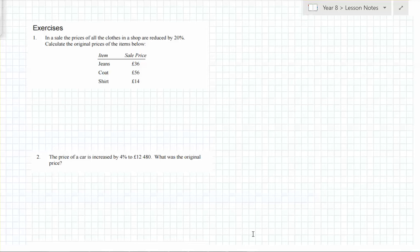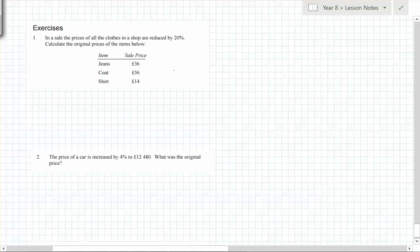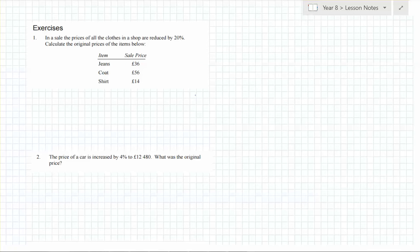Following on from last lesson: reverse percentages, where we're given the final price. During the sale, the price of all the clothes in the shop are reduced by 20 percent. Calculate the original prices. Let's see your methods — Luke, what did you do?